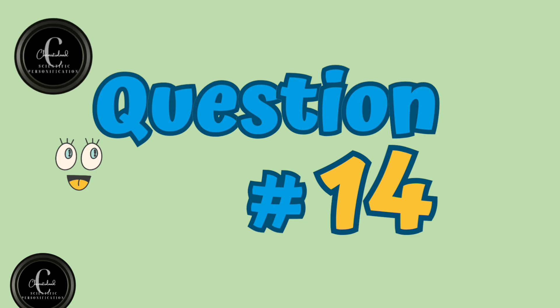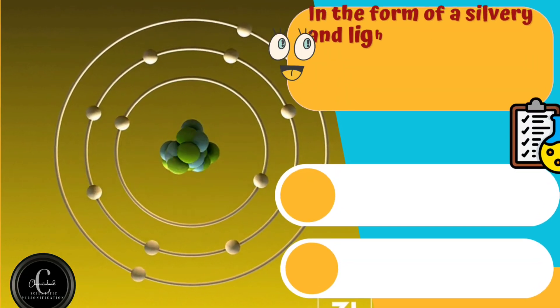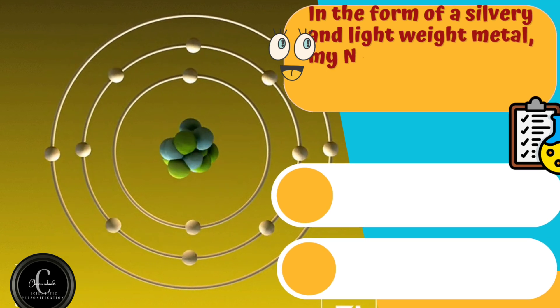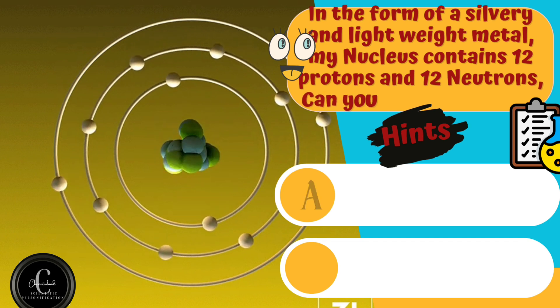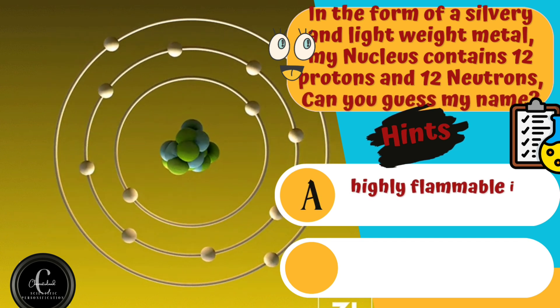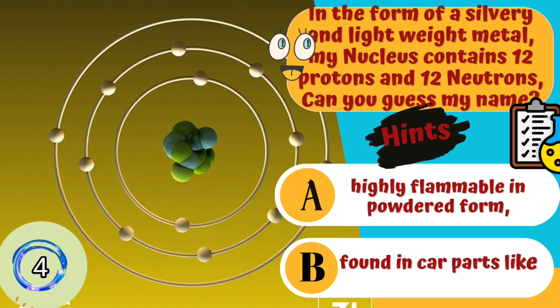Question number fourteen, in the form of a silvery and lightweight metal, my nucleus contains twelve protons and twelve neutrons. Can you guess my name? Hints are A. Highly flammable in powdered form. B. Found in car parts like wheels and engine.